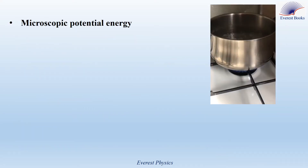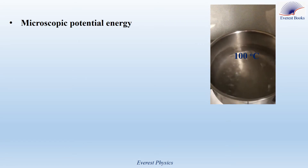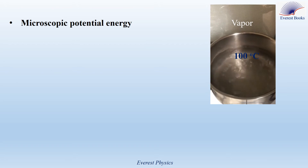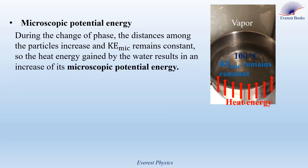Microscopic potential energy. In the shown video, when the temperature of water becomes 100 degrees Celsius at normal atmospheric pressure, it starts boiling and changes into vapor. Even though heat energy is given to water, its temperature remains constant, and its microscopic kinetic energy also remains constant. During the change of phase, the distances among the particles increase while the microscopic kinetic energy remains constant.